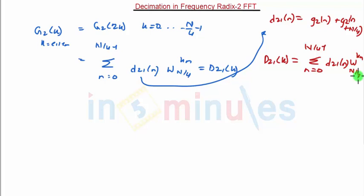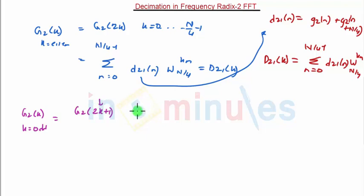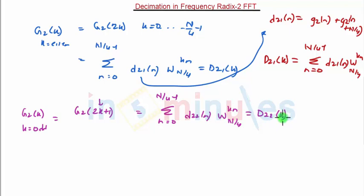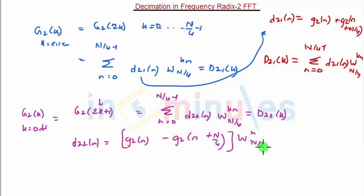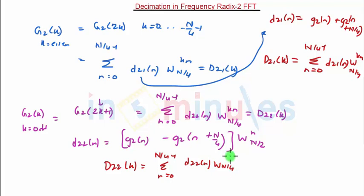For the odd case, g2(2k+1) for k equals 0 to N/4 minus 1, we define d22(n) = [g2(n) minus g2(n + N/4)] times W_(N/2)^n. That gives summation n equals 0 to N/4 minus 1 of d22(n) times W_(N/4)^(kn), which equals d22(k). Here d22(k) is the N/4-point DFT of d22(n), so d22(k) equals summation n equals 0 to N/4 minus 1 of d22(n) times W_(N/4)^(kn).